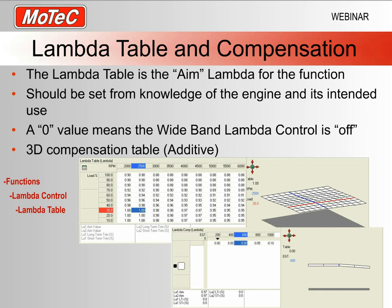The compensation table is a three-dimensional table which is a compensation to the main lambda table. As an example, I've used exhaust gas temperature as an axis. As exhaust gas temperature gets hotter, maybe I want to richen up the engine. At 800 degrees I've said to subtract 0.05 from the lambda — making it 5% richer — to hopefully cool off those exhaust valves. As it gets hotter still, I've made it richer. This is an additive or subtractive number, not a percentage like some other compensation tables.